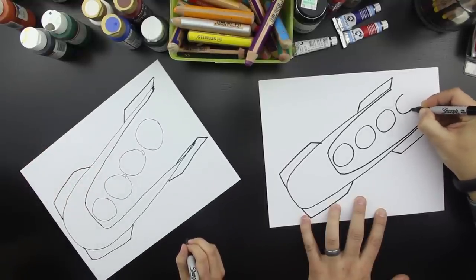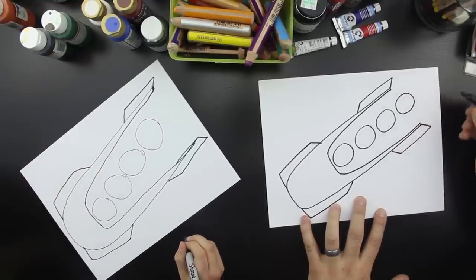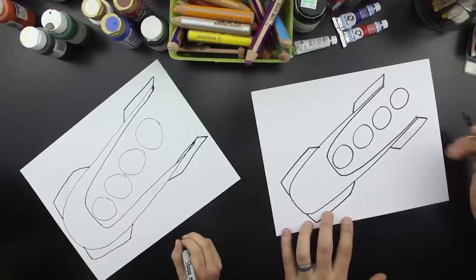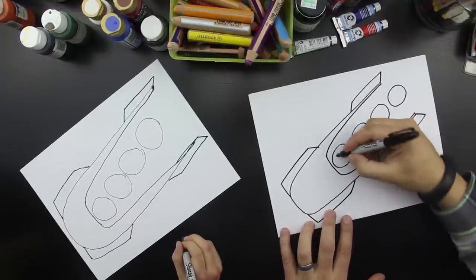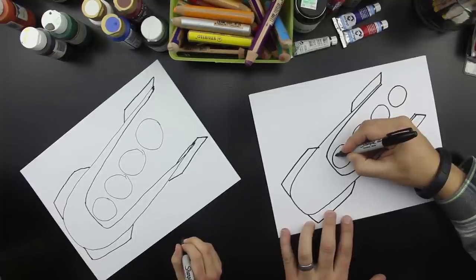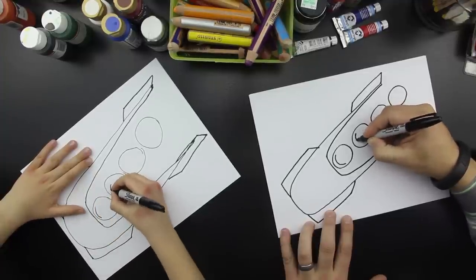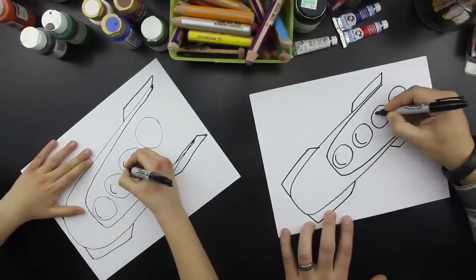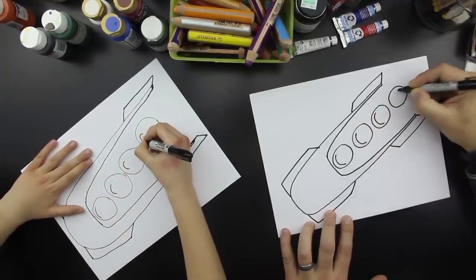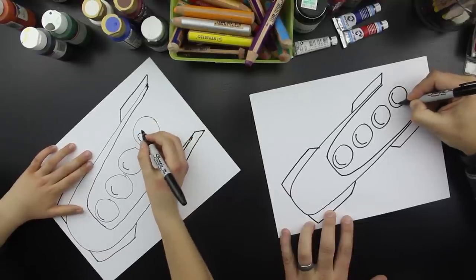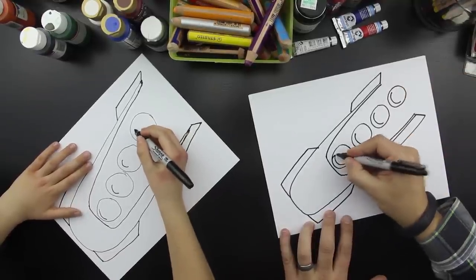My last guy is kind of falling off the back. Cool, so let's draw their masks. They have little visors, so I'm gonna just draw u-shapes inside the circles and then we go back and connect them.